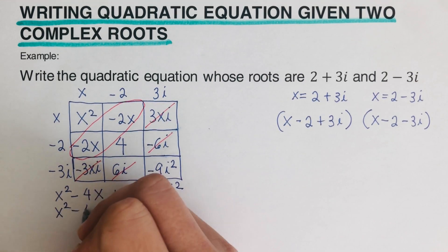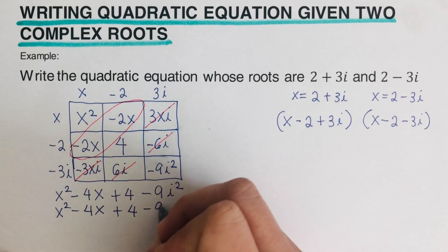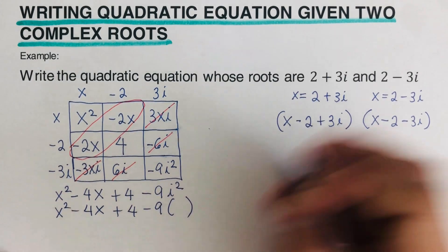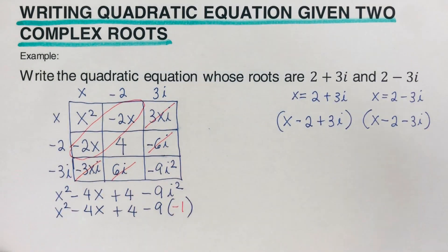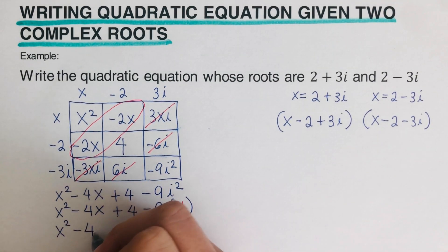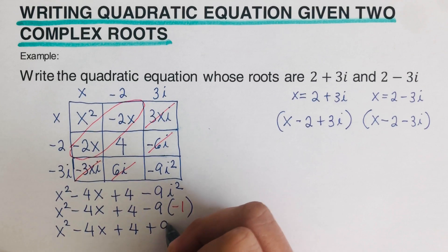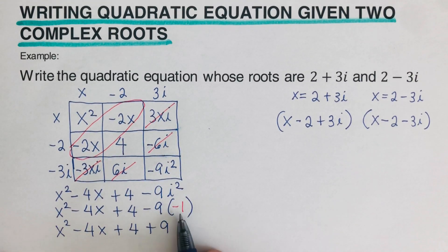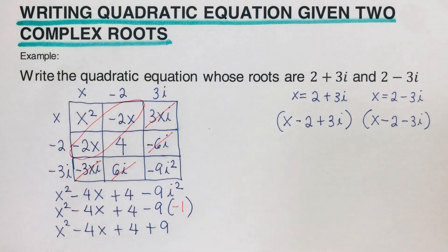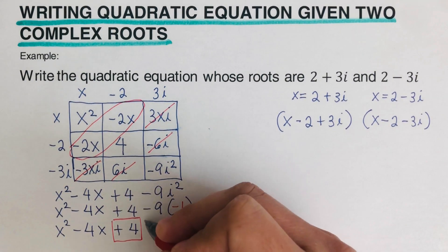Substituting i² = −1 gives: x squared minus 4x plus 4 minus 9 times negative 1. That negative 9 times negative 1 gives a positive 9. So we have x squared minus 4x plus 4 plus 9, and we combine the like terms 4 and 9.